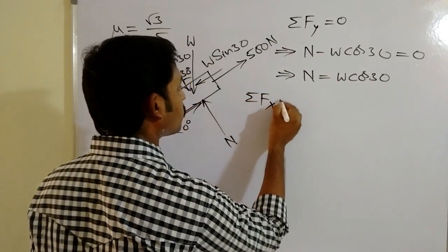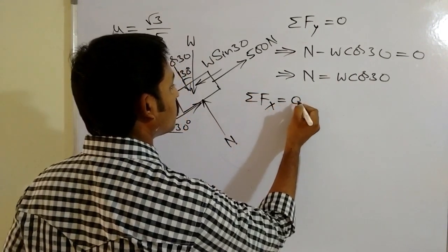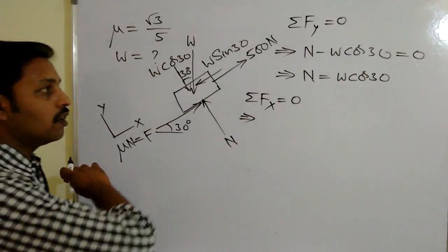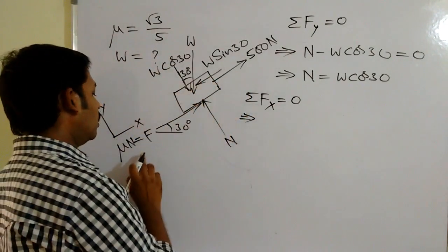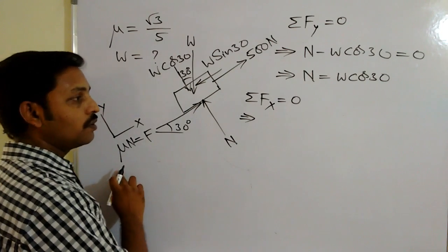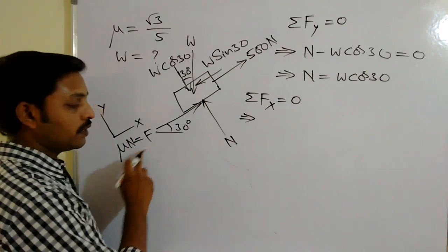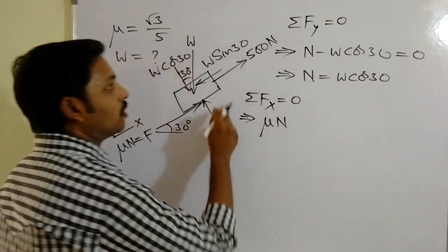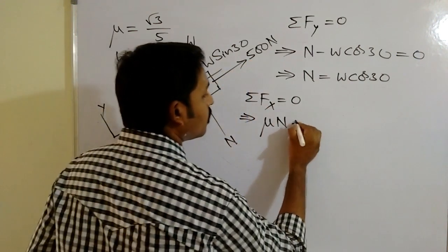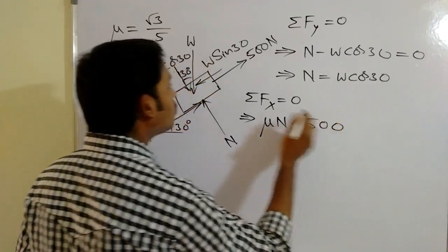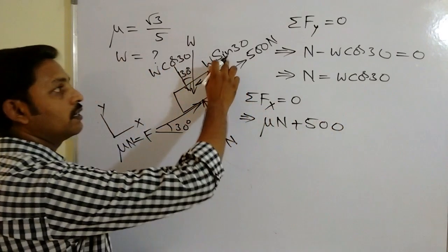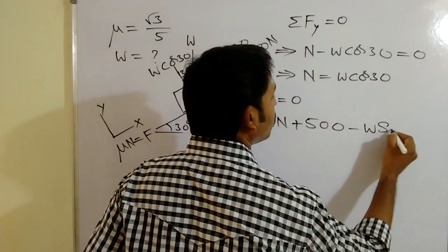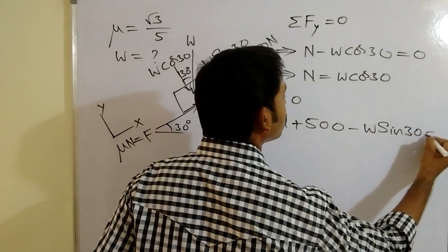Now considering ΣFx = 0: along the x-direction, the frictional force F = μN acts up the plane (positive x-direction), the 500 Newton force acts along the positive x-direction, and W sin30° acts along the negative x-direction. So the equation is: μN + 500 − W sin30° = 0.